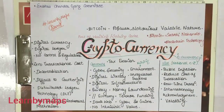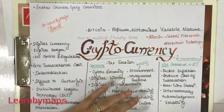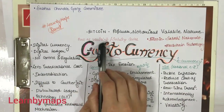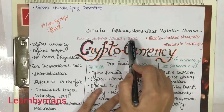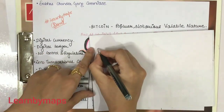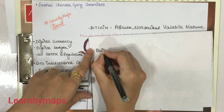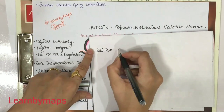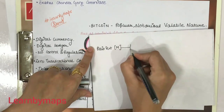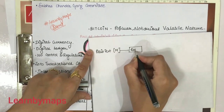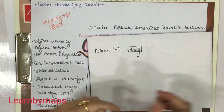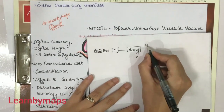First of all we will talk about what we mean by cryptography. Cryptography means the art of writing and solving codes. It is a different way — suppose that we have a plain text. The plain text is M. When we are in the encryption mode, it will become M prime.